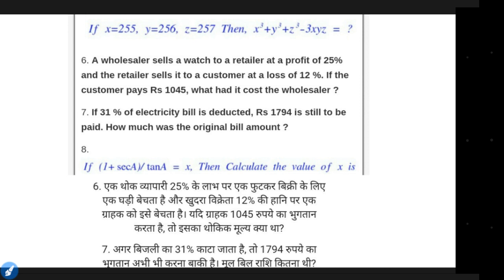So 1,794 rupees remains to be paid after the electricity bill discount is applied. If the bill was reduced by some amount, the remaining amount is 1,794. How much was the original bill?